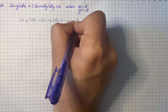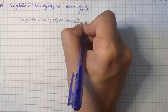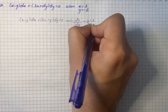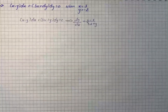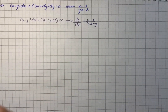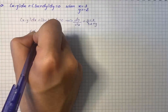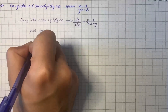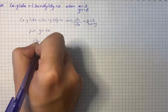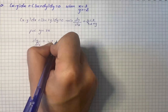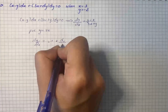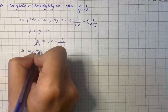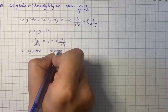This becomes dy/dx equals (y minus x) over (3x plus y). The given differential equation is a homogeneous equation, so we will put y equals vx, which gives dy/dx equals v plus x times dv/dx.